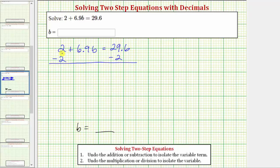So subtracting two undoes the positive two, or two minus two is equal to zero. And therefore the left side is now just 6.9b. On the right side we have 29.6 minus two. We can also write two as 2.0. Move the decimal point down to the difference and subtract. Six minus zero is six, and 29 minus two is 27. Now we have the equation 6.9b, or 6.9 times b equals 27.6.